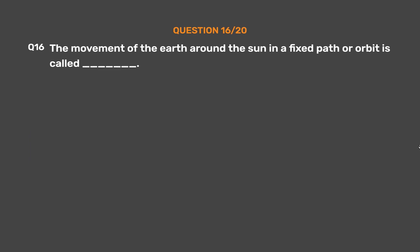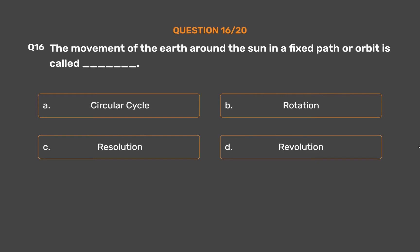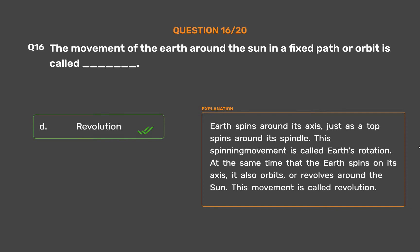Question number 16. The movement of the Earth around the Sun in a fixed path or orbit is called underscore. Option A: Circular cycle. Option B: Rotation. Option C: Resolution. Option D: Revolution. The Earth spins around its axis, just as a top spins around its spindle — this spinning is called Earth's rotation. At the same time, it also orbits or revolves around the Sun. This movement is called revolution.